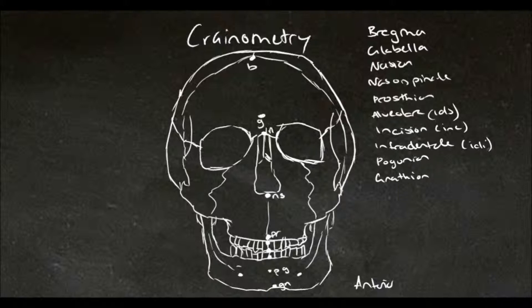First we'll do a review of our mid-sagittal landmarks. Superiorly we had bregma, which marked the intersection between the coronal and sagittal sutures.